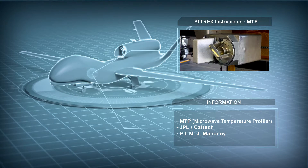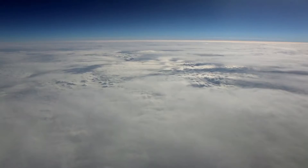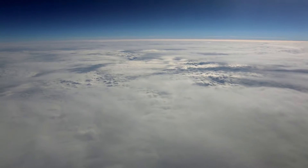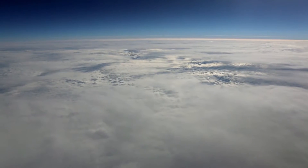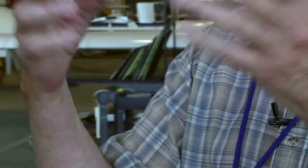The MTP is a passive microwave radiometer, so it doesn't emit any radiation like a radar does. It only receives radiation emitted by mostly oxygen molecules in the Earth's atmosphere. Oxygen molecules are homogeneously mixed in the atmosphere, and depending upon the amount of radiation that we get from them, we can tell the temperature of the atmosphere.